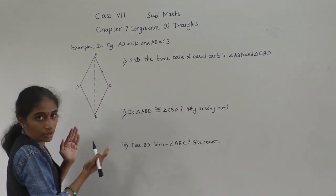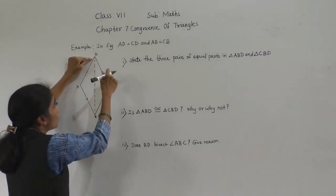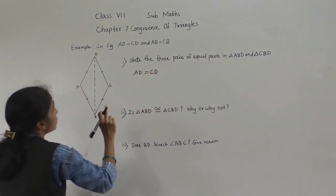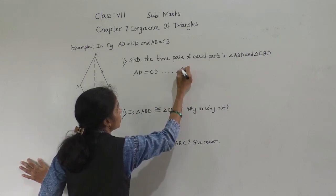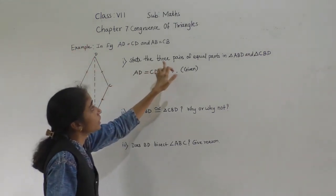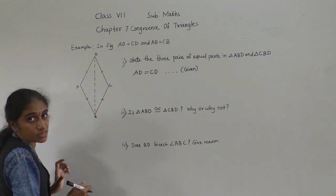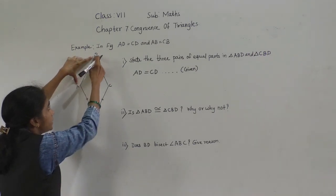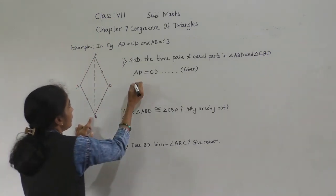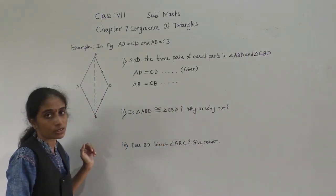These are the two triangles — triangle ABD and triangle CBD. State the three pairs of equal parts. What is given? AD is equal to CD — this is given. So AD and CD are equal. Then AB is equal to CB — this is also given.